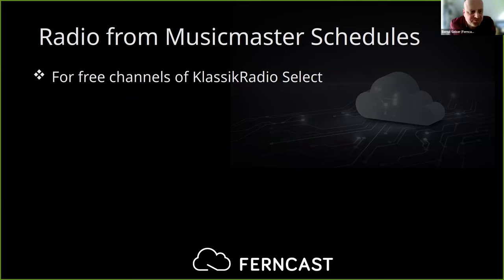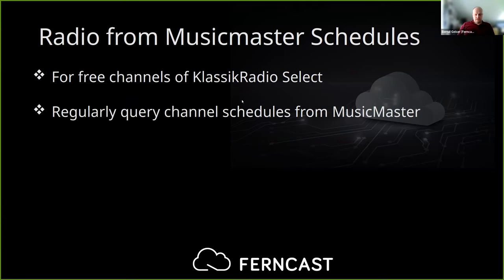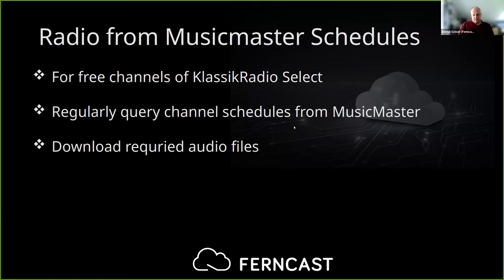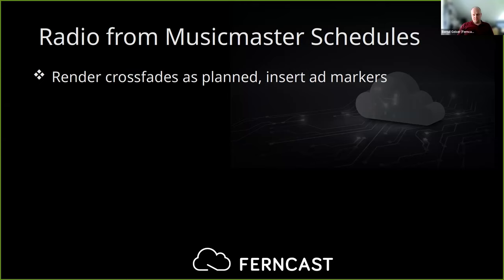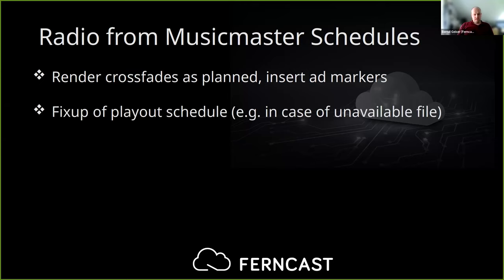How do we produce the radio from the Music Master schedules? For the free channels of Classic Radio Select, we regularly query the channel schedules from Music Master for all 53 channels, download the required audio files, and include those files in a pre-configured pipe. This file source gets updated automatically on a regular schedule with the current playlist. The pipe renders the crossfades as planned, inserts ad markers, and puts out the whole thing to the CDN. We also have error resiliency: if a file is unavailable or couldn't be downloaded, there's a possibility to automatically fix up the playlist schedule — the file will be left out and everything else moved accordingly for a seamless experience.